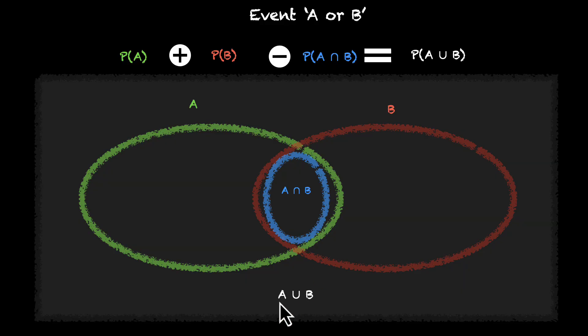So if you want to find A union B, we're going to add the green zone and we're going to add the red zone. Notice we're adding the blue zone twice, which means if we subtract it once, we should neatly get A union B. Amazing!